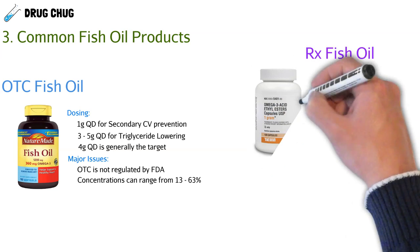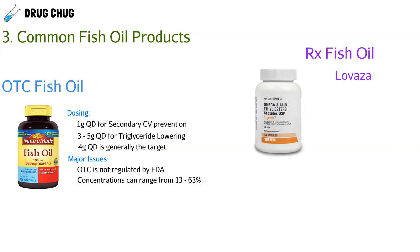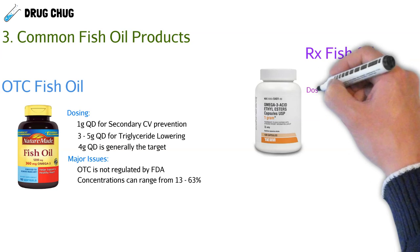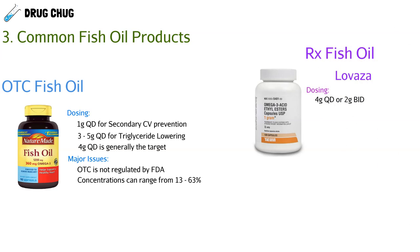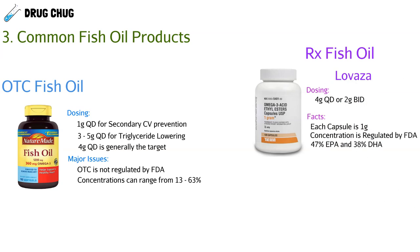There are two prescription fish oils. The first is Lovaza, dosed at four grams every day or split as two grams twice a day. Each capsule is one gram, so patients need a minimum of four capsules daily. Because it's prescription and FDA-regulated, every capsule is standardized at 47% EPA and 38% DHA, ensuring patients get the right dose every time.